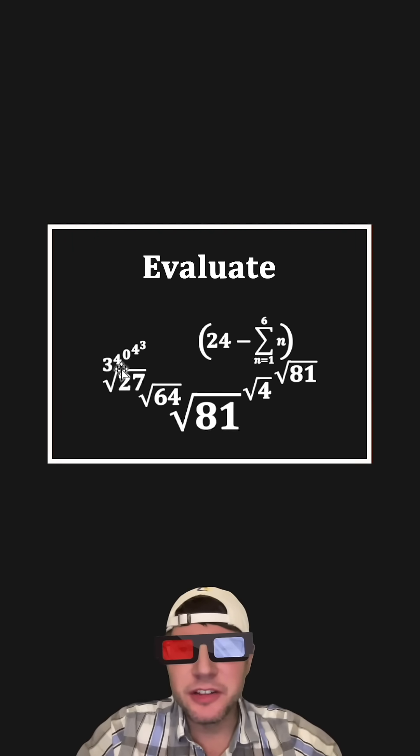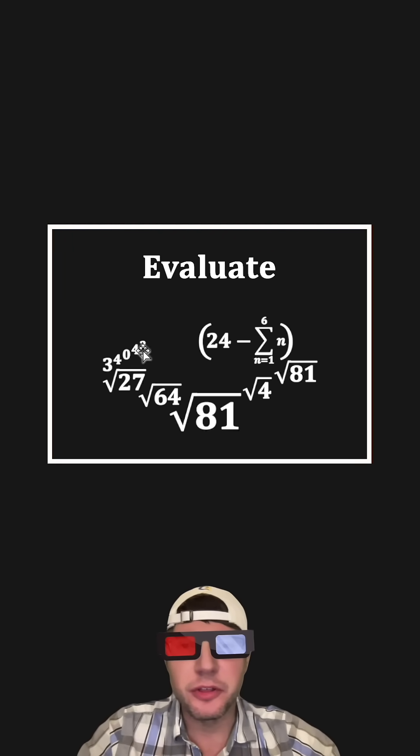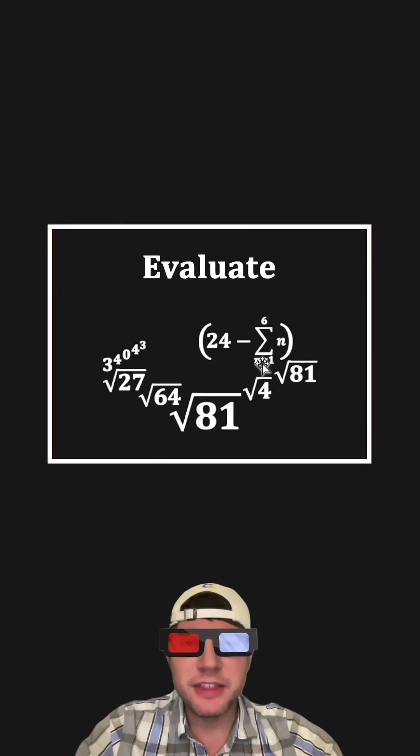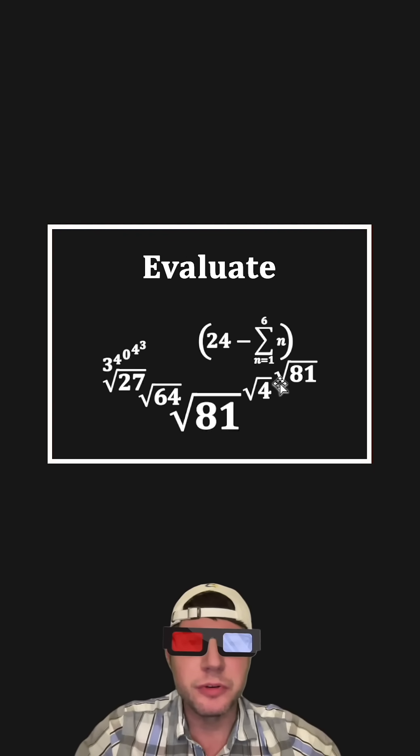Hey guys, this looks like a fun one. It's 3 to the 4 to the 0 to the 4 to the third root of 27th root of 64th root of 81 to the power of the square root of 4 to the power of 24 minus the sum from n equals 1 to 6 of nth root of 81.